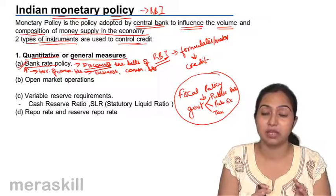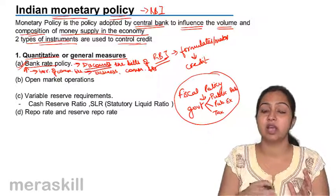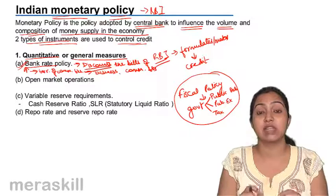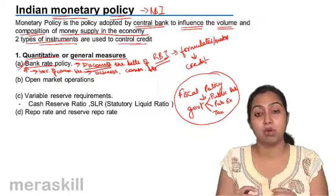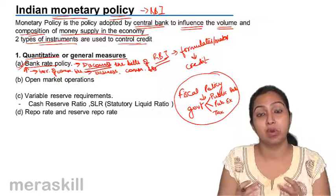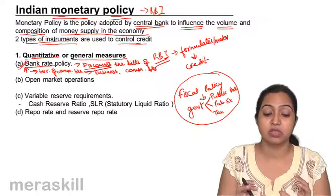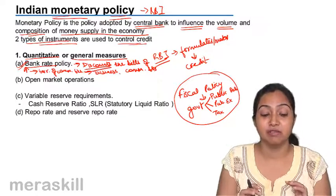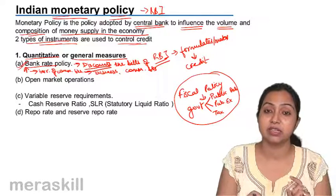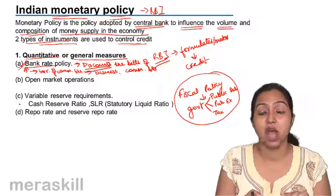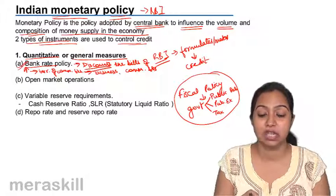By increasing the bank rate, they reduce money supply. When they want more money supply in the market, they reduce the bank rate. Commercial banks are encouraged to borrow more, they lend more, people borrow more and invest more, income increases and demand increases. This is how the bank rate policy works for RBI. Bank rate is the rate at which RBI discounts the bills of commercial banks, also known as discount policy.